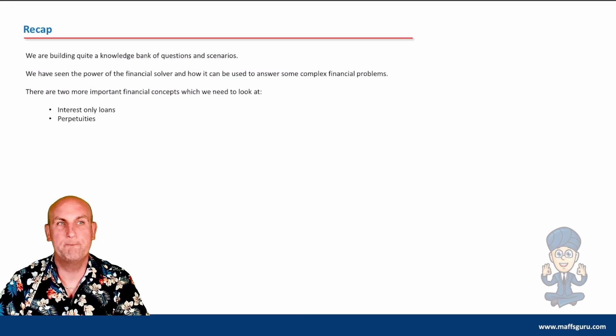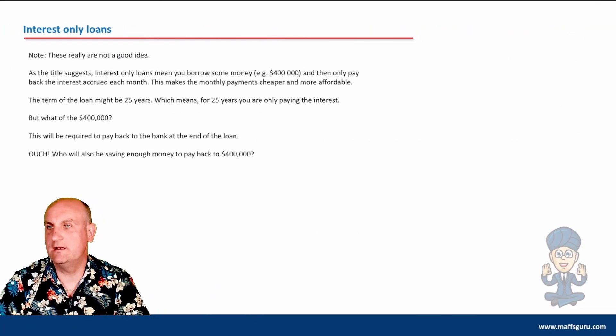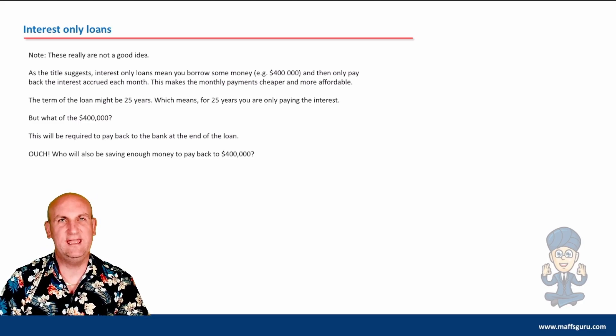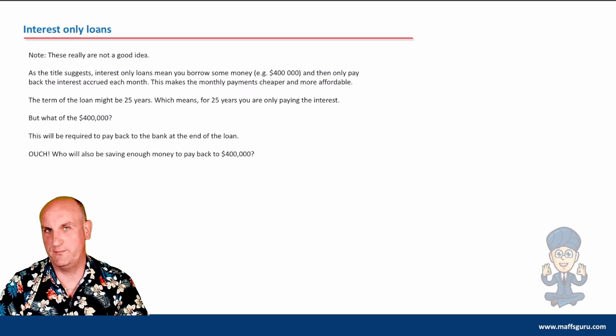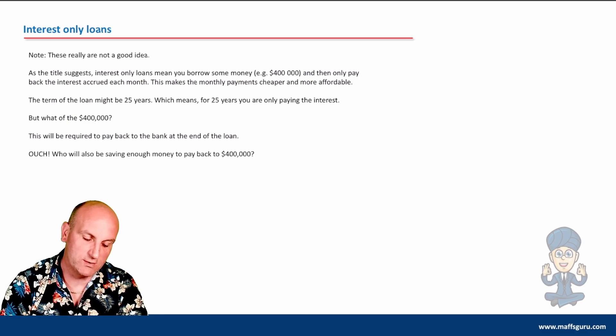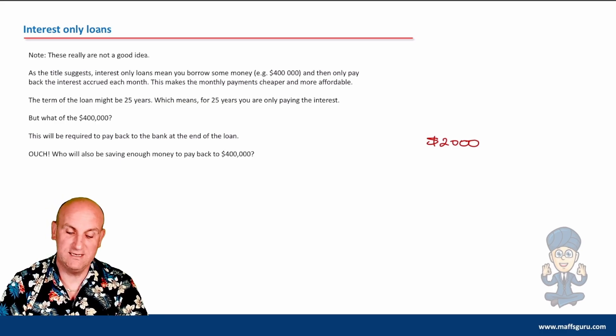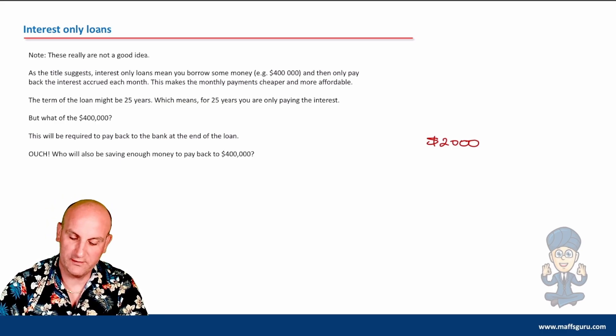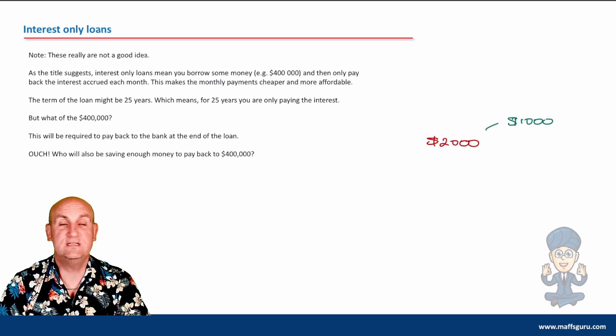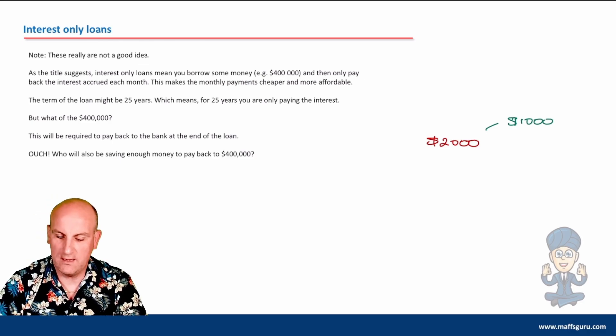An interest-only loan - in the United Kingdom many years ago banks had an idea to make payments cheaper for people. My mortgage payment is about $2,000 a month. Of that $2,000, $1,000 goes to the bank in interest, and the other $1,000 is paid off my principal.